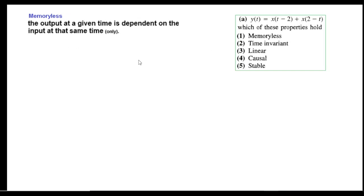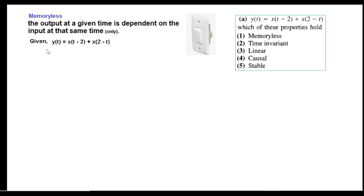First, let's see whether the system is memoryless. According to the definition, the output at a given time depends on the input at that same time. Take the example of a switch: when we turn it on the light is on, when we turn it off the light goes off — no memory. But if the light goes off after 10 seconds, then the switch has memory.